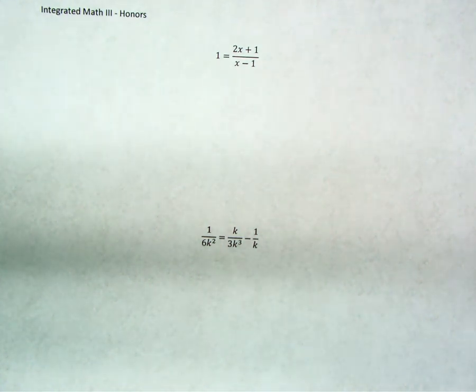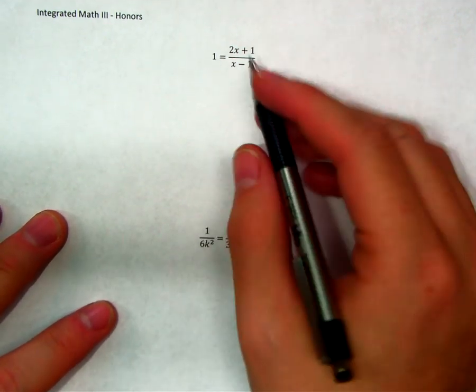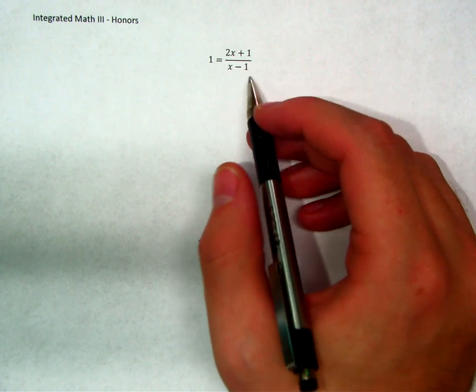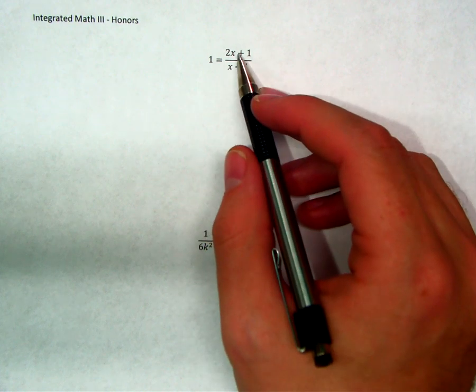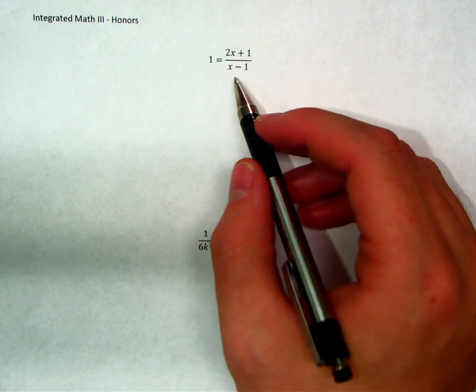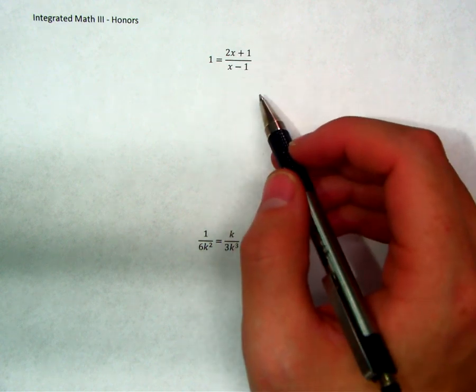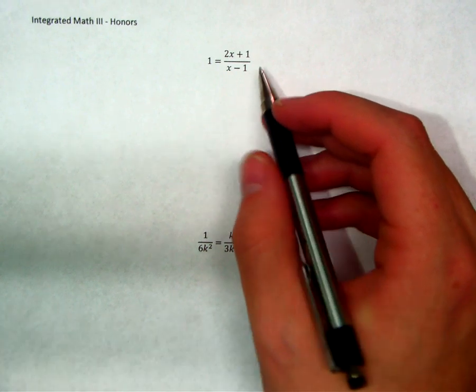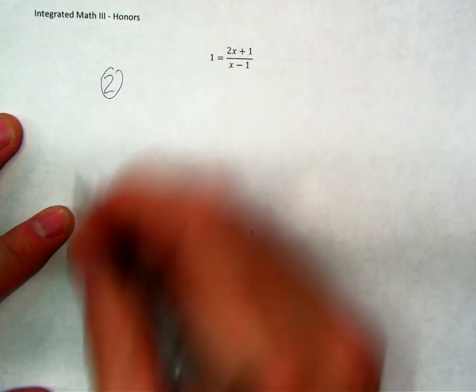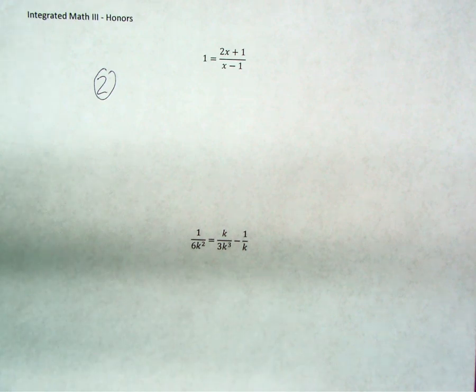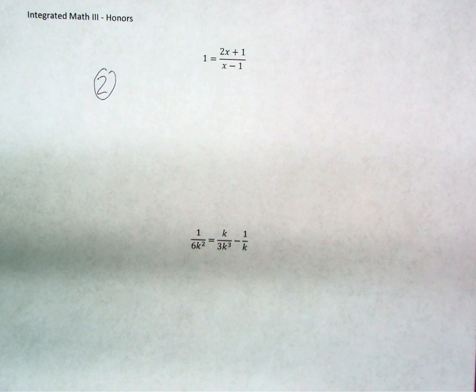Let's move on to the second example. Remember the first step is to factor everything — that's already done. If we look at the top and bottom of this fraction, these polynomials are linear, which means they can't be factored anymore, so step one is already done. We're skipping on to step two: get rid of all the denominators. In this case there is only one denominator.